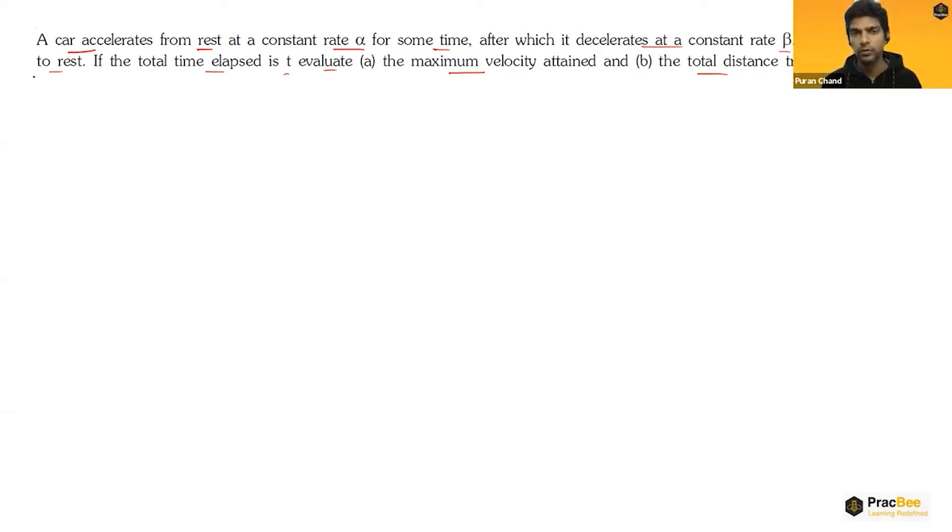If you want to draw the graph of velocity versus time in case of uniform acceleration, it will be a straight line. So your maximum velocity attained will be alpha beta upon alpha plus beta into t. That is your v max. And the distance traveled will be alpha beta upon alpha plus beta into t squared by 2.